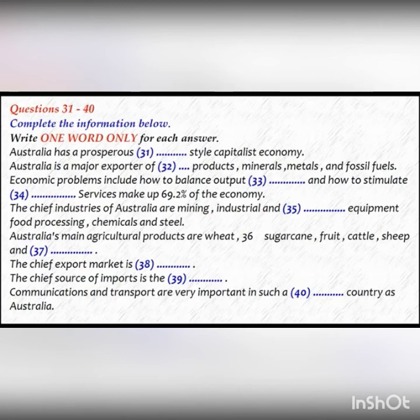What are the chief industries of Australia? They are mining, industrial, and transport equipment, food processing, chemicals, and steel. What are Australia's main agricultural products? They are wheat, barley, sugarcane, fruit, cattle, sheep, and poultry.